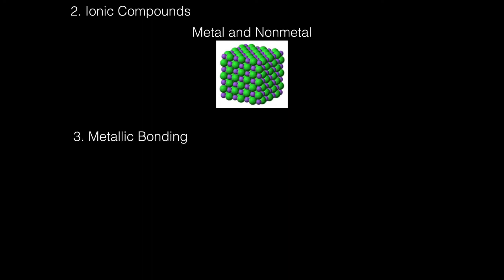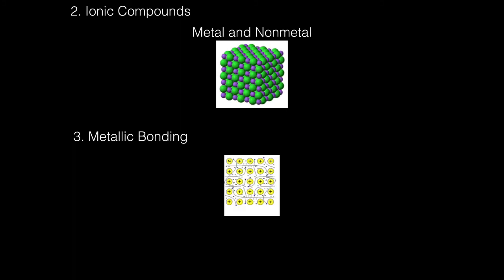Finally, we have metallic bonding, which occurs between atoms of one metal type. A key characteristic of metallic bonding is that it can conduct electricity. The reason metals conduct electricity is that their electrons can move freely. For example, if you stick a metal fork into a socket, it will conduct electricity because its electrons are free to move throughout the metal.